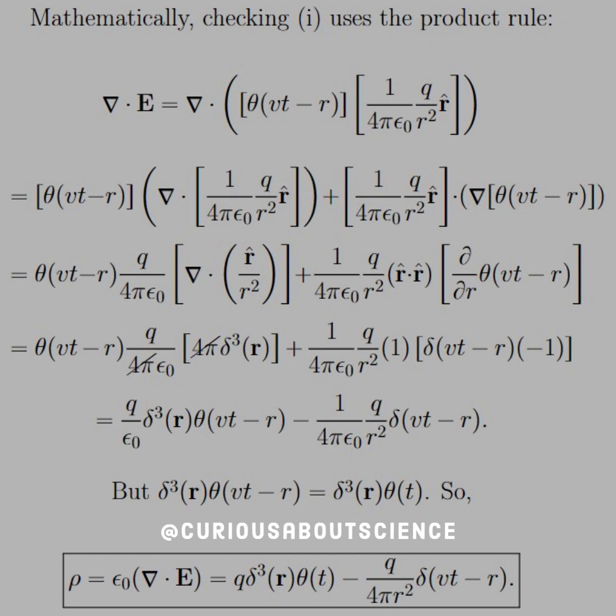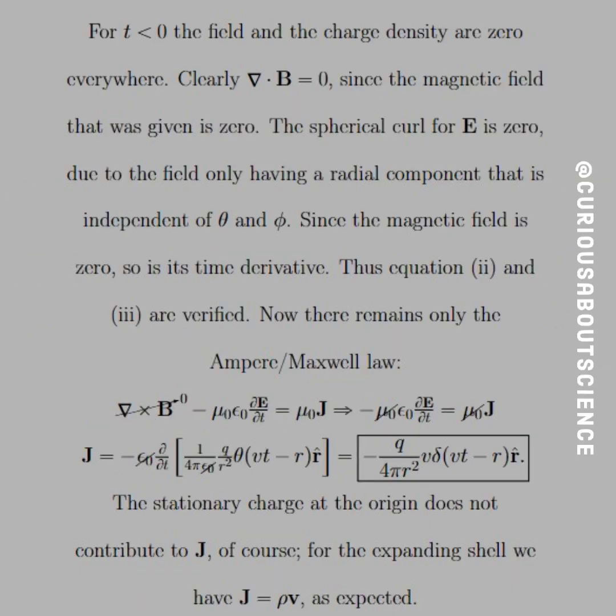We get rho is equal to q times the three-dimensional Dirac delta times the step function as a function of time. This reinforces the fact that this charge is at the origin, and then we have minus, the minus sign of the fact that the spherical shell propagating out, the minus sign is there to cancel out whatever field was produced at the origin. So physically, we're getting exactly what we're expecting. That's pretty cool. Kind of a hard way to write it, but it does satisfy the equation.